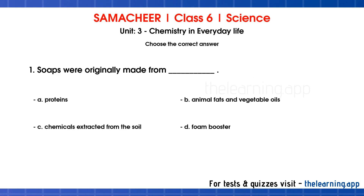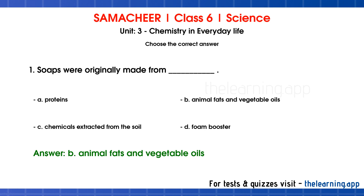Question 1. Soaps were originally made from dash. Options are: A. Proteins, B. Animal fats and vegetable oils, C. Chemicals extracted from the soil, D. Foam booster. Correct answer is B. Animal fats and vegetable oils.